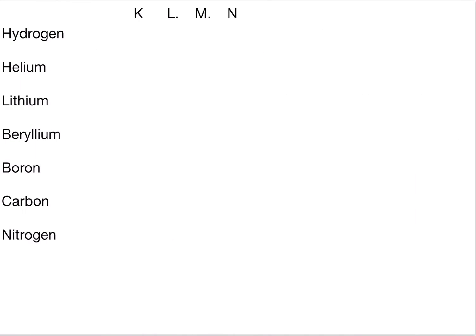Let's understand electronic configuration by doing a few examples. The first element is hydrogen. It has an atomic number of 1, so it has only 1 electron. We write 1 in the first K shell.